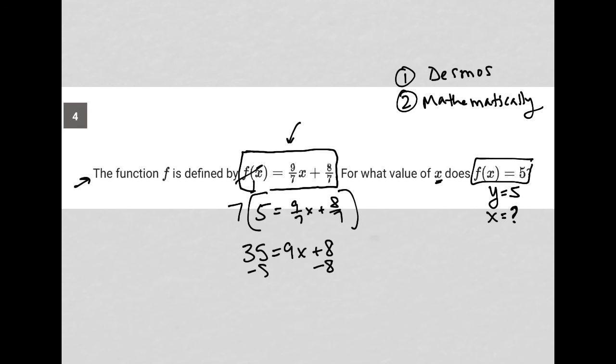I can then subtract 8 from both sides. So 8 is gone on the right-hand side. 35 - 8 = 27. So I have 27 = 9x. Dividing both sides by 9, I get x = 3. So there would be my answer. So two options here.